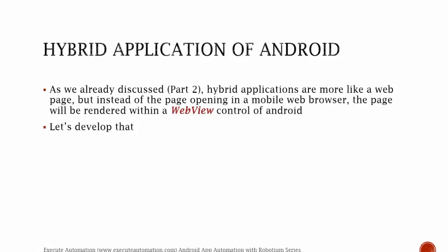So hybrid applications in Android — as we already discussed in part 2 — are more like a web page, but instead of the page opening in a mobile web browser, the page will be rendered within a web view control of Android. So if you want, please go back to part 2 and see what I was discussing about.